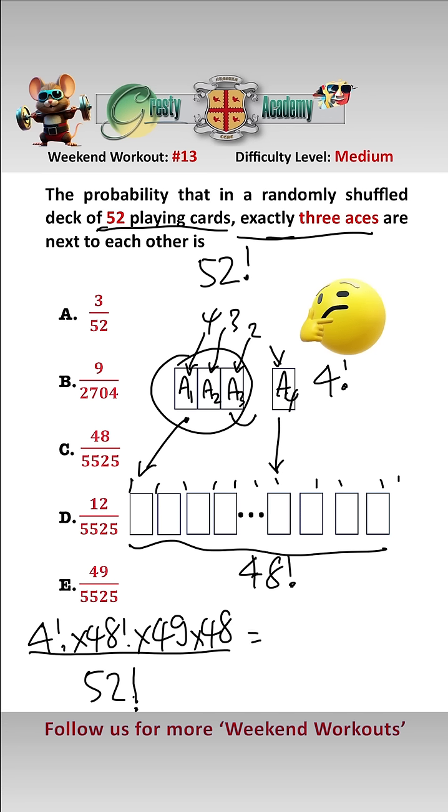Simplifying this gives us 48 times 24 over 50 times 51 times 52 and simplifying that further gives us 48 over 5525 which is answer C.